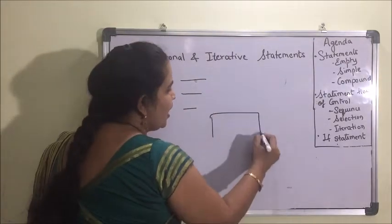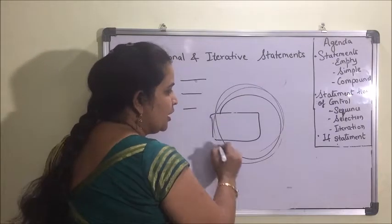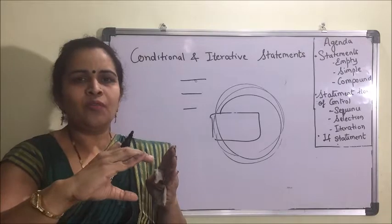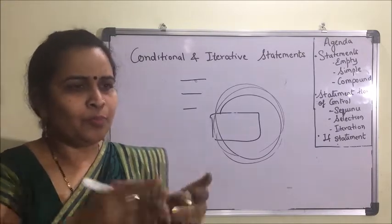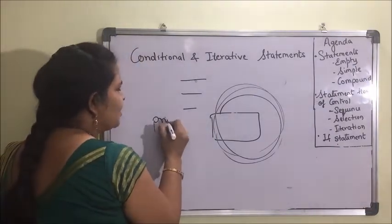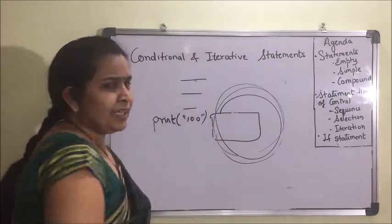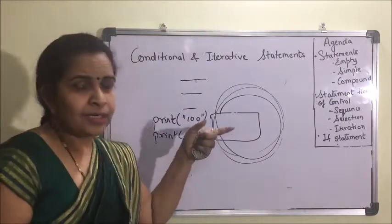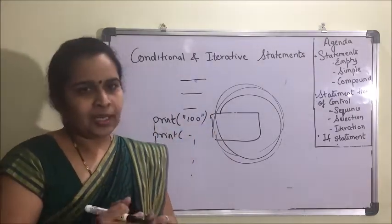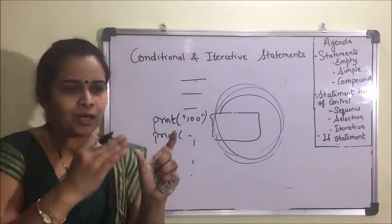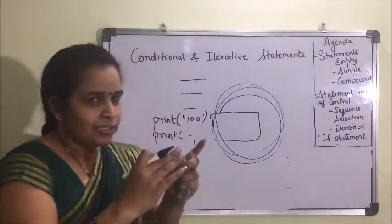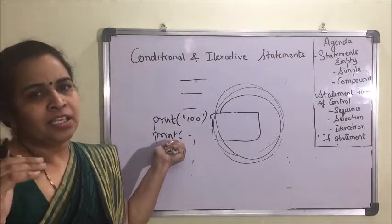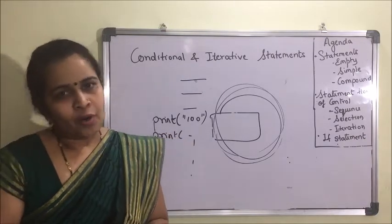Next is iteration, which means repetition of steps again and again — a block of statements is repeatedly executed until the condition fails. For example, if I want to print 100 five or six times it's manageable, but printing it 100 times would be difficult to write manually. In that case we use iteration: a condition and an iteration statement followed by a colon, and as long as the condition is true, the block executes. Examples of iteration statements are 'for' and 'while'.